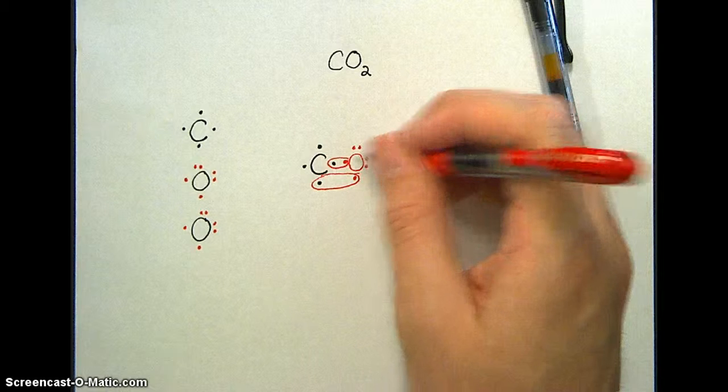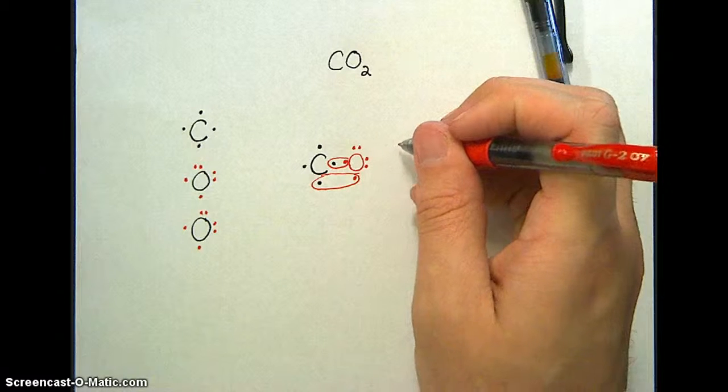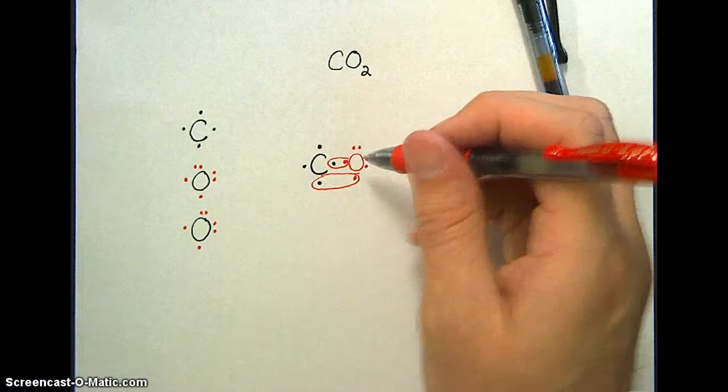And once that happens, oxygen has 8 electrons some of the time. And carbon now has 6 electrons some of the time, instead of just 4.